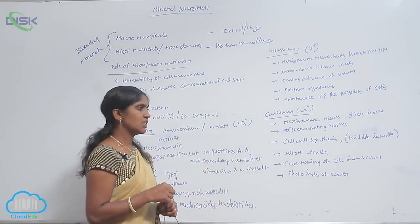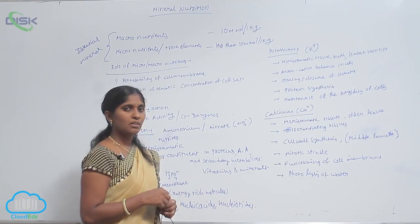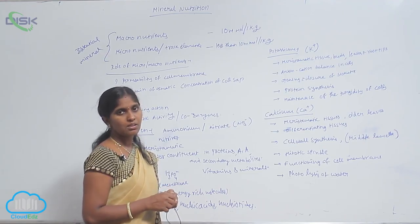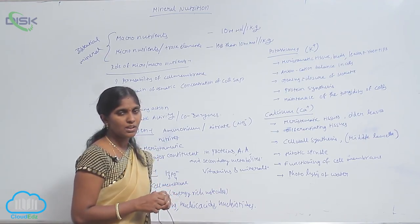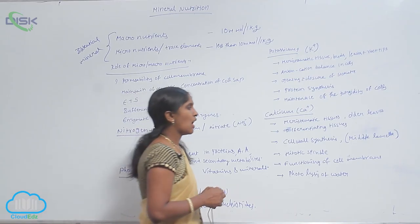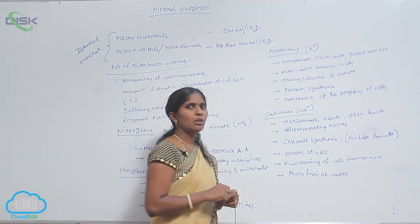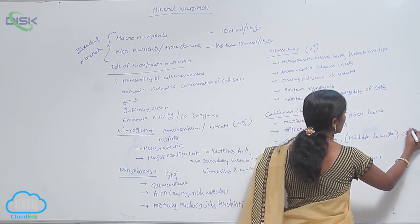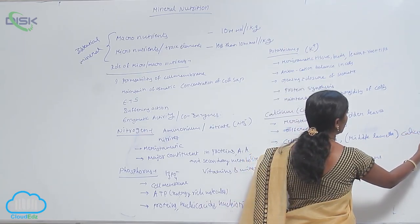During cell division, calcium ions are important to promote cell wall synthesis because the middle lamella of the cell wall is calcium pectate.